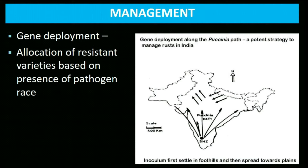Management of wheat rust: We should adopt integrated disease management practices. The first method is gene deployment — allocation of resistant varieties based on the presence of pathogen race.